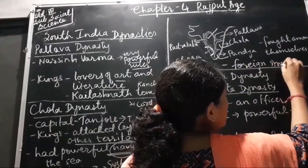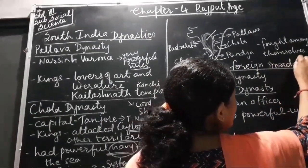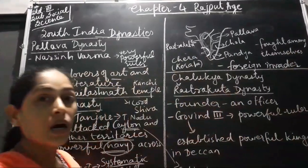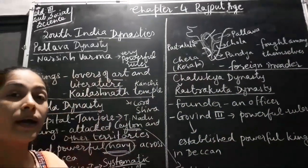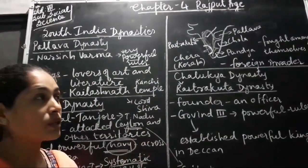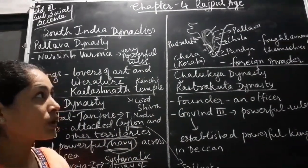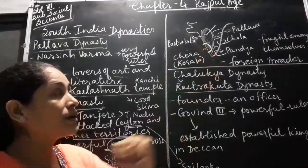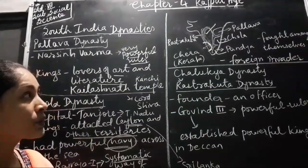Invaders are people who come from other countries and rule over another country. So there were other foreign invaders who came during that time.